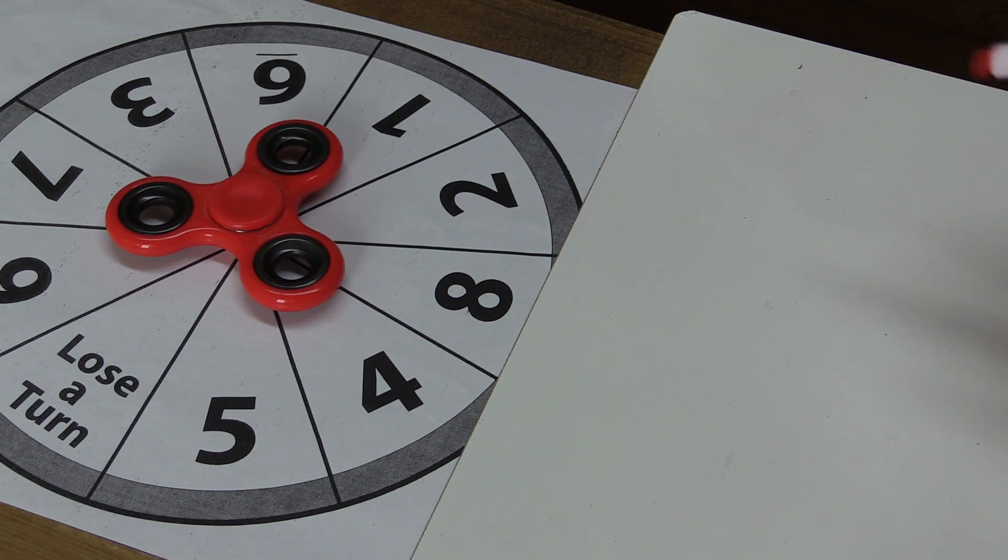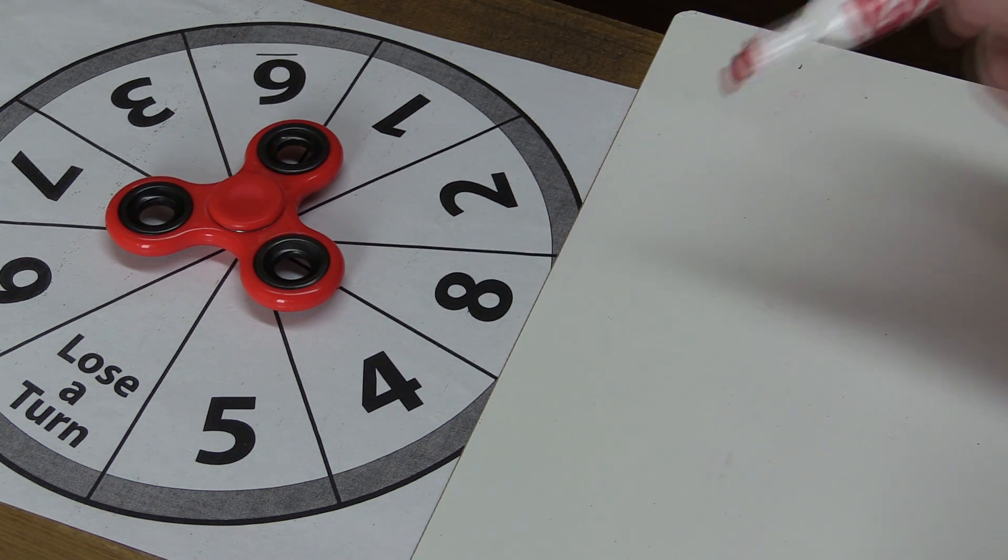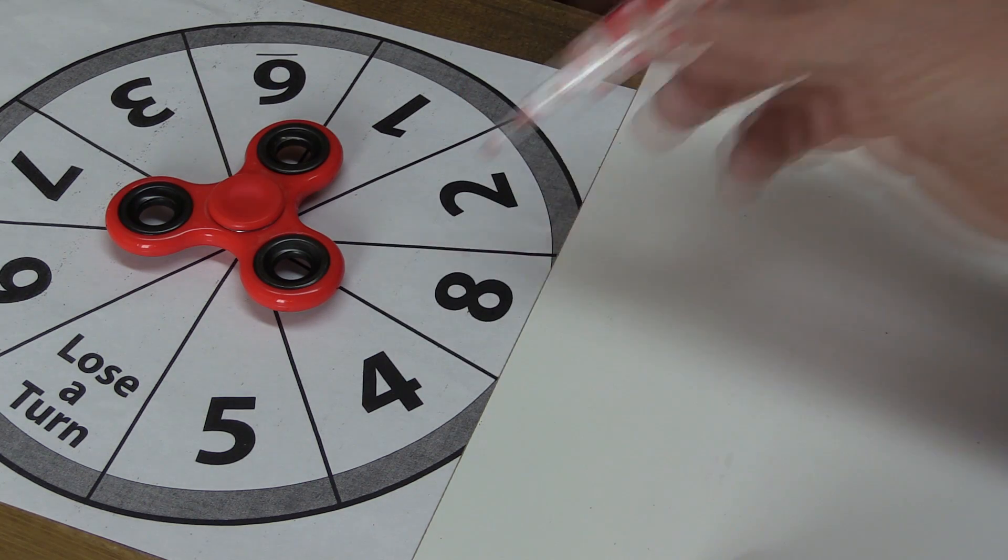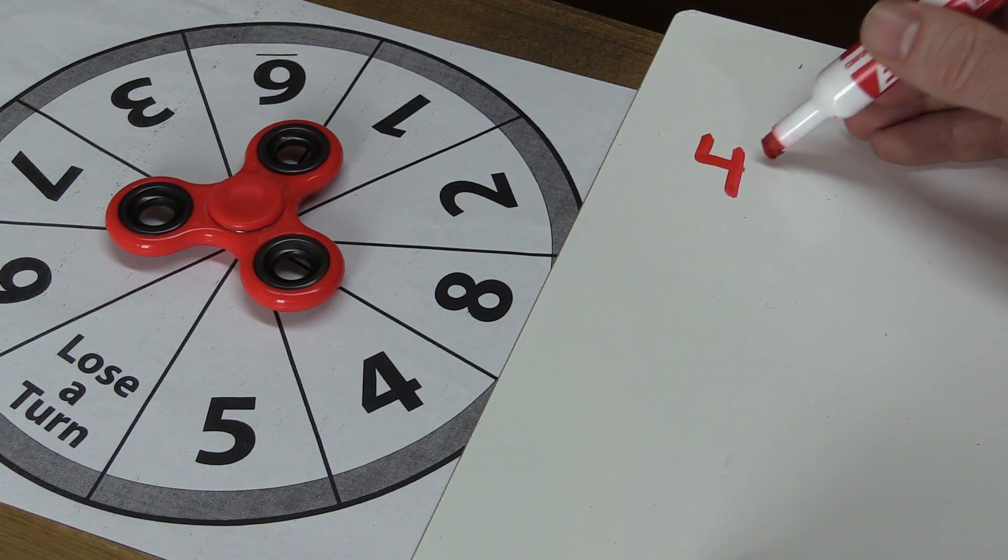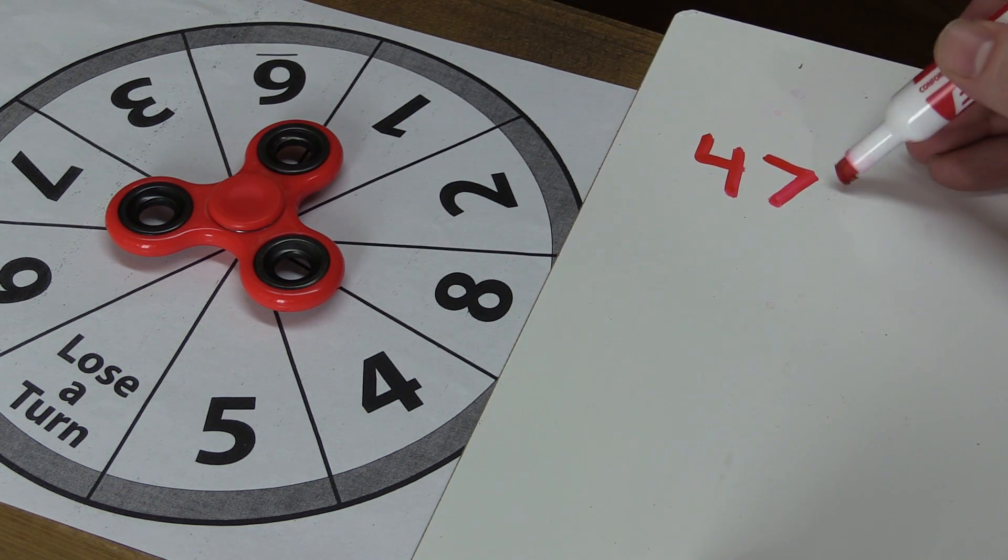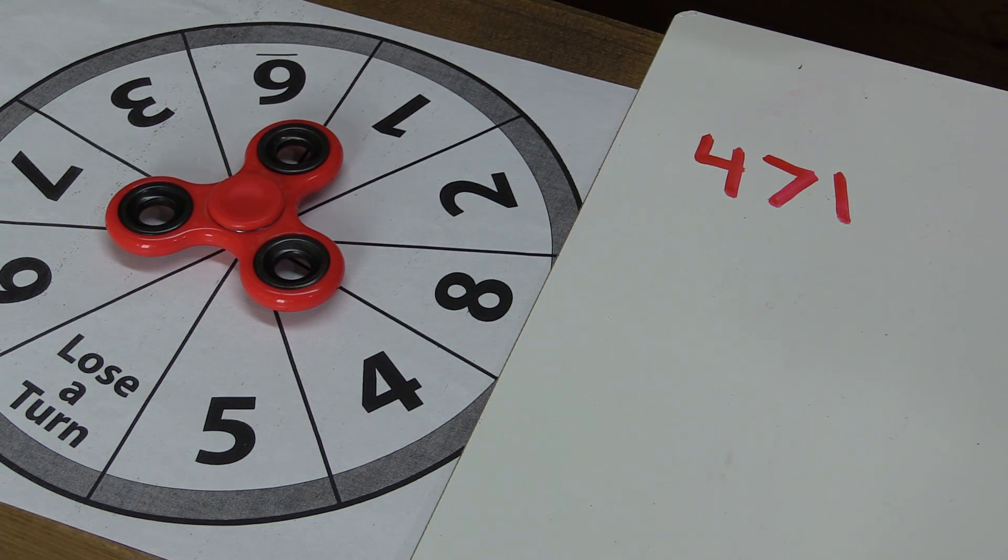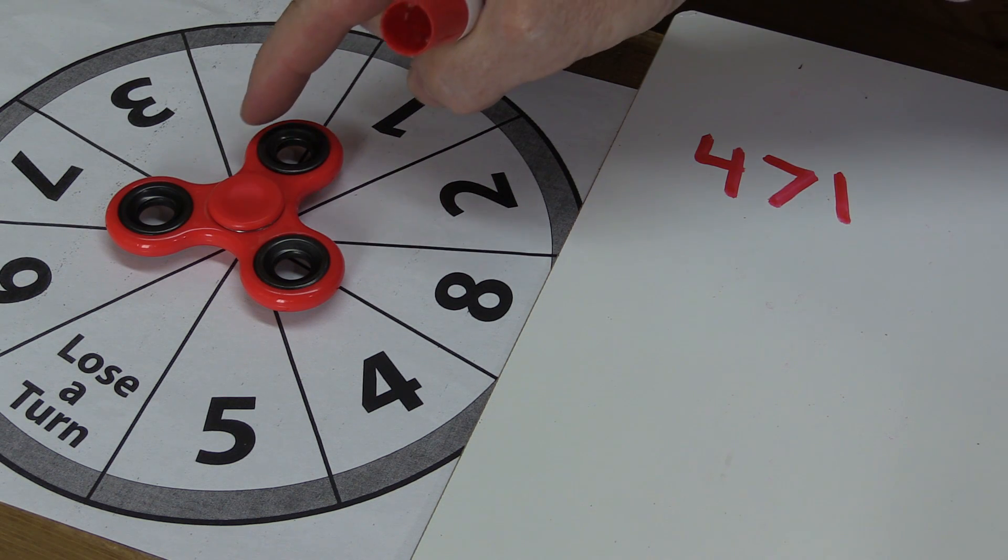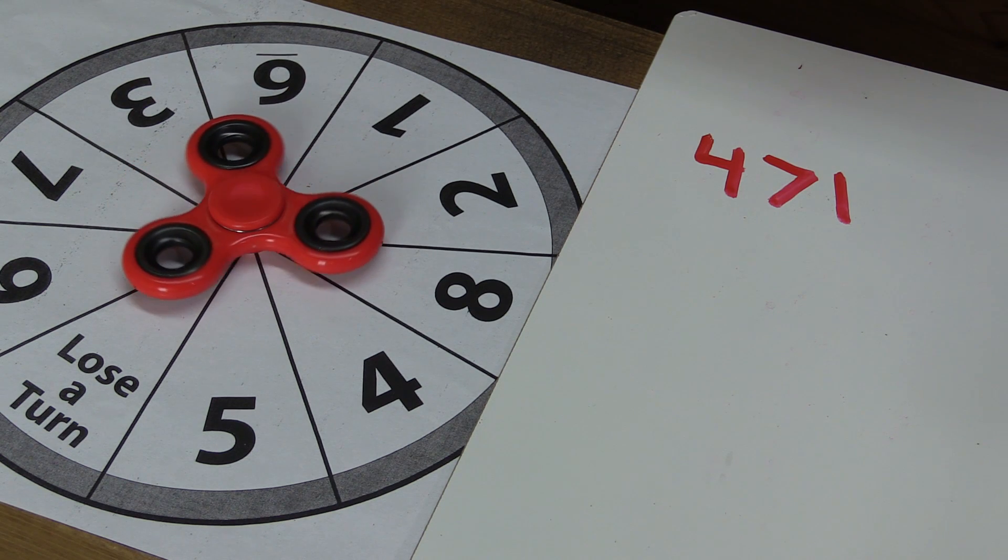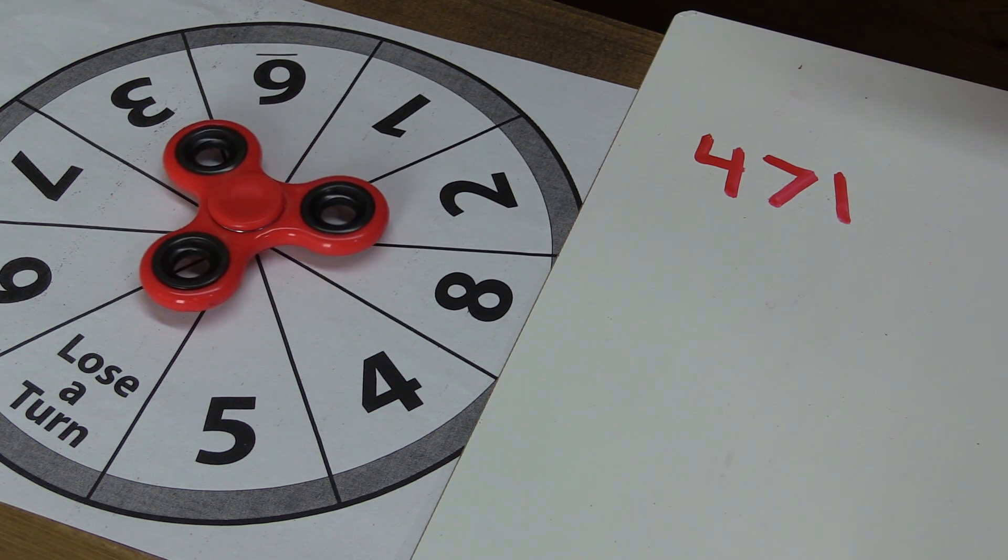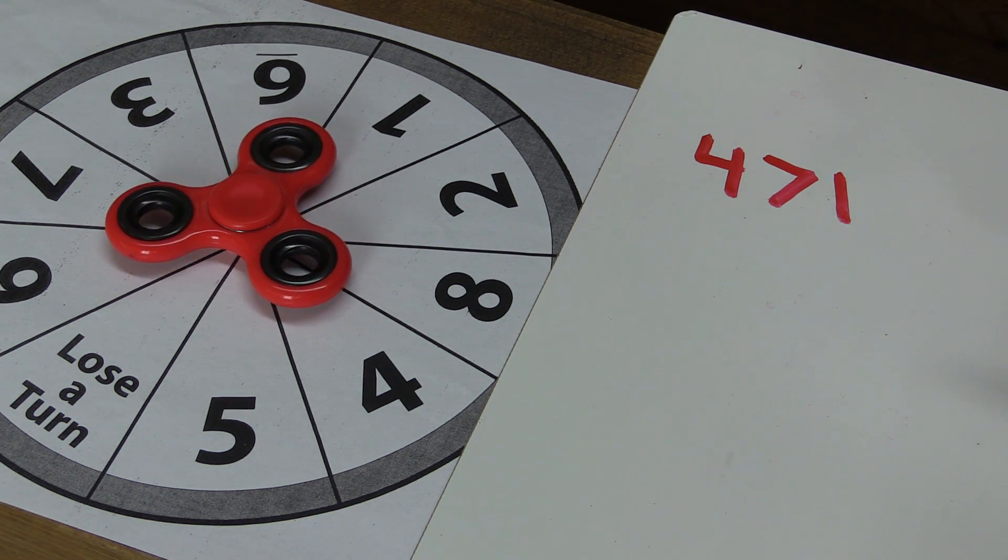They can write them in any order they want to, so I'm going to take four, seven, and one - they have to say 471. Then they spin one more time and we're going to practice doing three-digit addition.